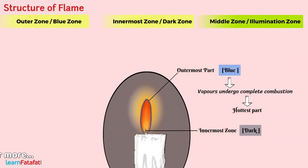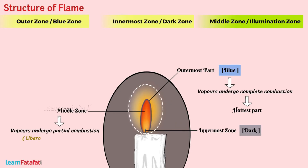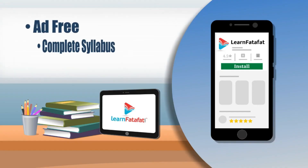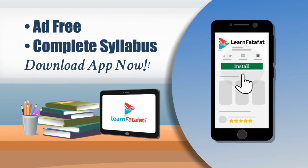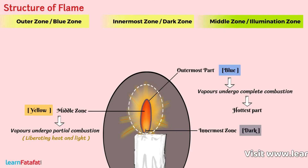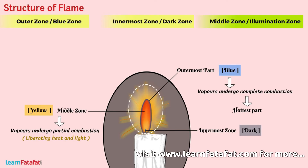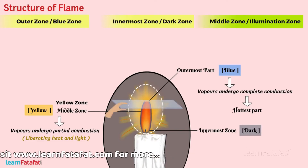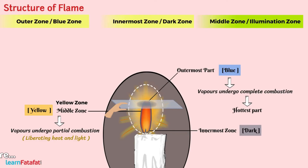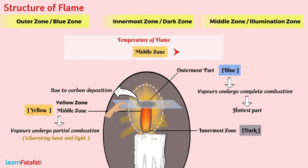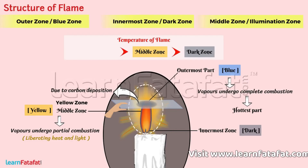Middle zone or illumination zone. The light we observe when the candle is lit is due to the middle zone. In this region, vapors undergo partial combustion, liberating heat and light. The light emitted is mostly yellow in color, therefore this zone is also called the yellow zone. If a glass plate is kept in the middle part of the flame, it forms a black ring on the glass plate. The black ring is due to carbon deposition on the plate. The temperature of the flame in the middle zone is hotter than the dark zone, but cooler than the outermost zone.